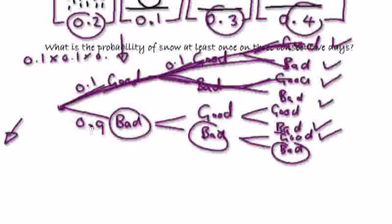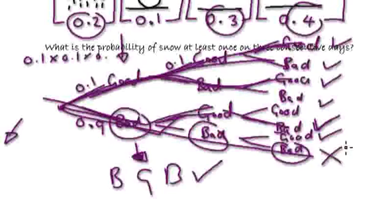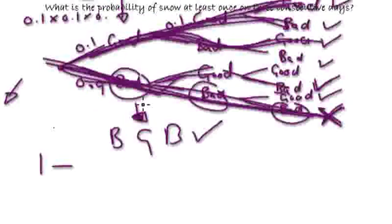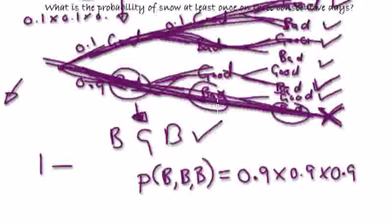Just accept that - if you add up all the branches, it comes to 1. Now, all the branches are good, because if you have bad, good, bad, well this is a good outcome because she's got one day that snows. The only bad one - this branch here, bad, bad, bad - is the only one we don't want. So rather than adding up all these branches, which would take ages, I'm just going to work out this branch here. Probability of bad, bad, bad equals 0.9 times 0.9 times 0.9, because we need bad and bad and bad.